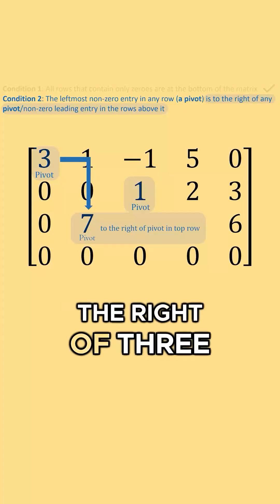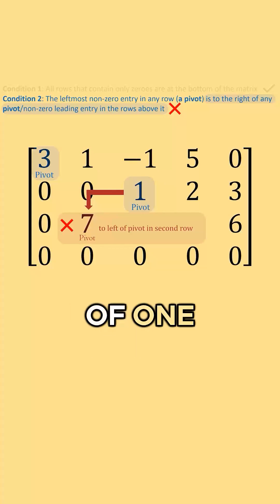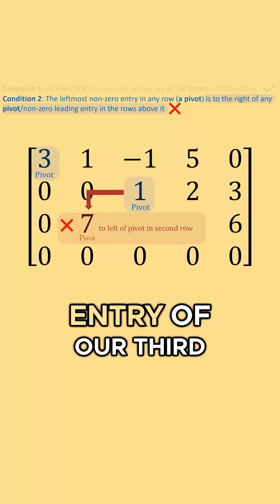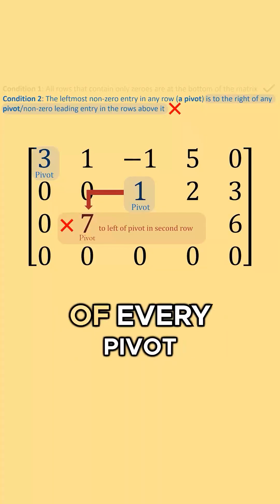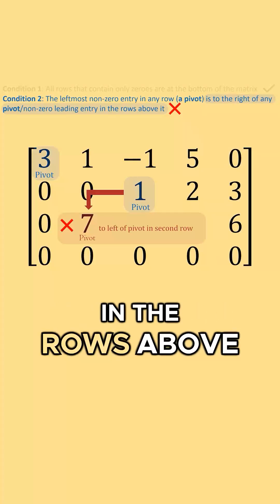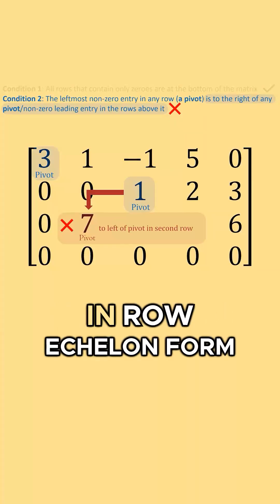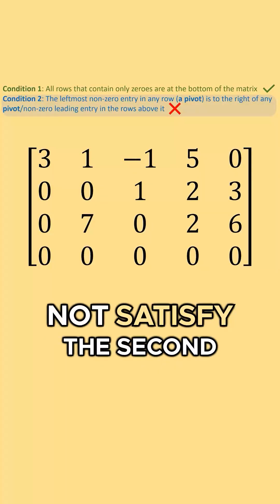7 is to the right of 3, but 7 is not to the right of 1. The pivot or leading entry of our third row is not to the right of every pivot or leading entry in the rows above it. This is not in row echelon form, because we do not satisfy the second condition.